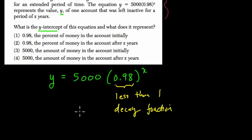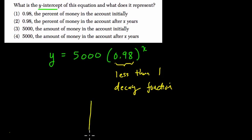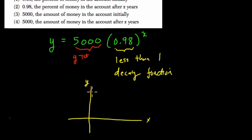To get a sense of what this looks like as a graph, they want the y-intercept. So if we think about our y and x-axis, this is actually going to start here at 5,000.